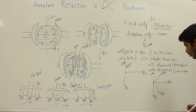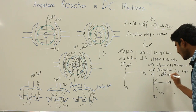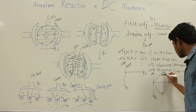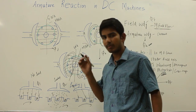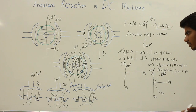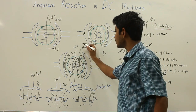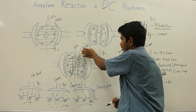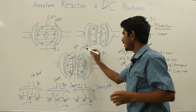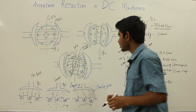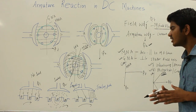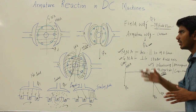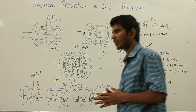The brushes are always placed along the magnetic neutral axis because the reversal of armature current takes place along this axis. Due to the effect of armature flux on the main field flux, the MNA gets shifted, and thereby the brushes also have to be shifted. However, predicting the position of the magnetic neutral axis becomes hard once there is armature reaction, making it hard to determine where to place the brushes, resulting in sparking in the machine.